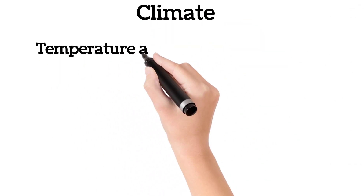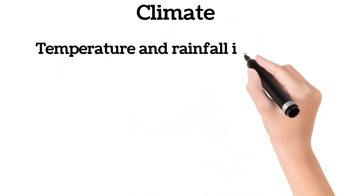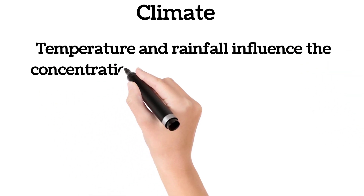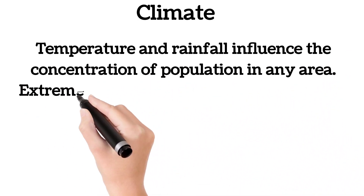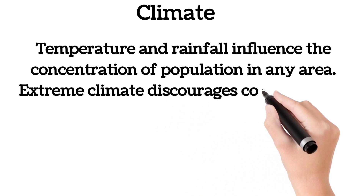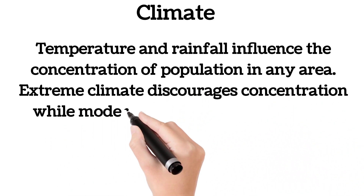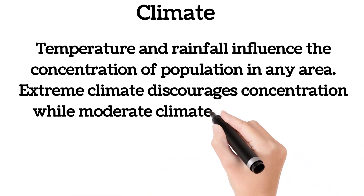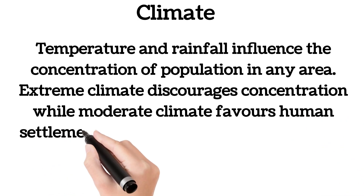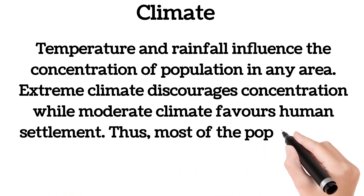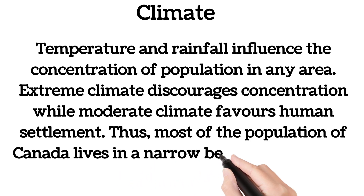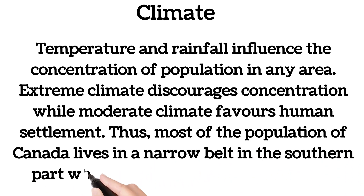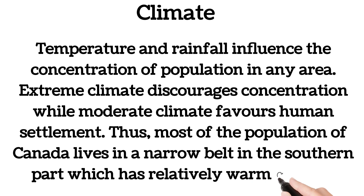Climate: temperature and rainfall influence the concentration of population in any area. Extreme climate discourages concentration while moderate climate favors human settlement. Thus most of the population of Canada lives in a narrow belt in the southern part, which has a relatively warm climate.